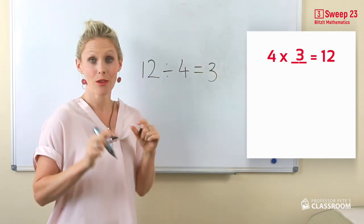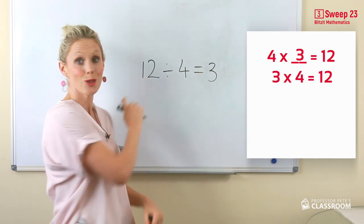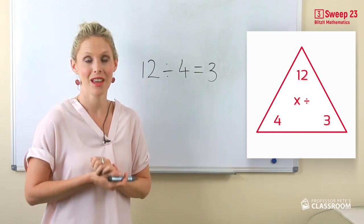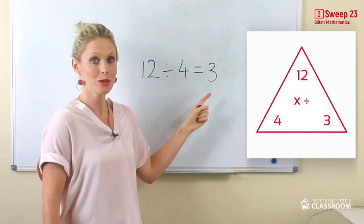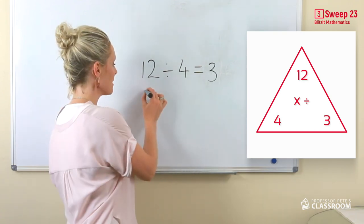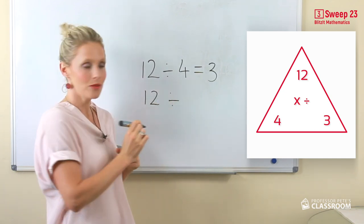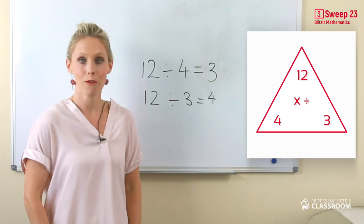We know that four times three and three times four equals twelve. This is our fact family. Therefore twelve divided by four equals three and twelve divided by three equals four.